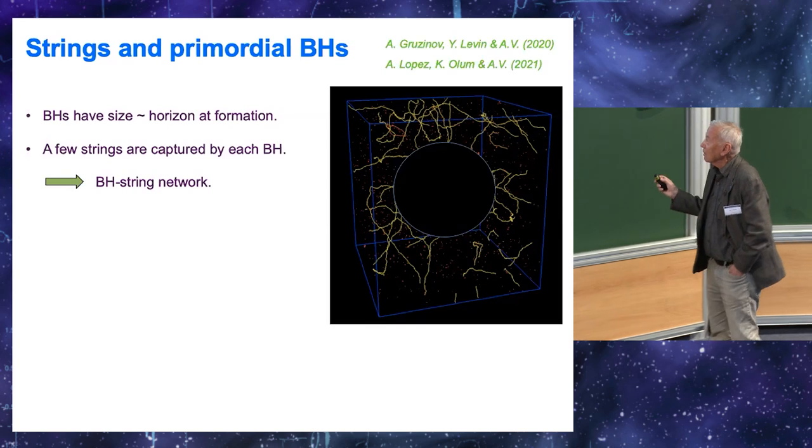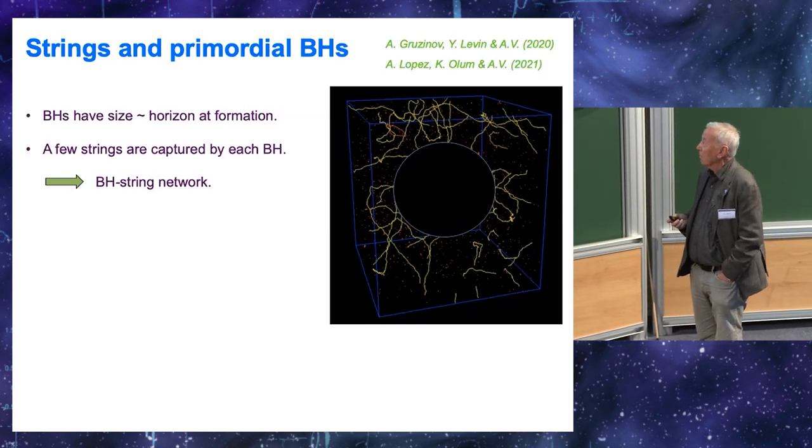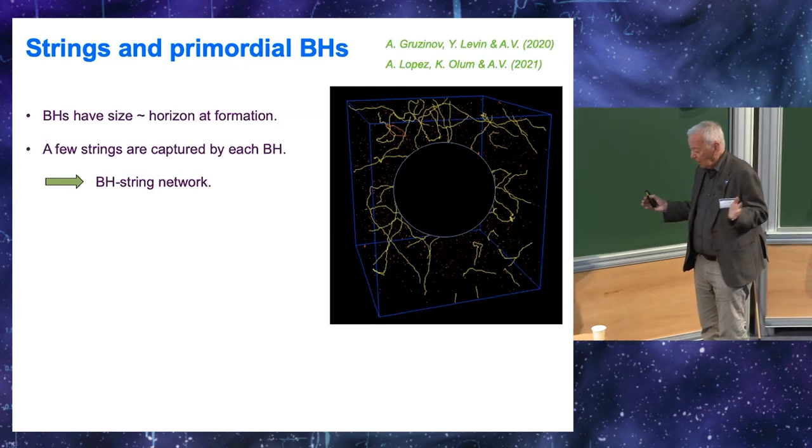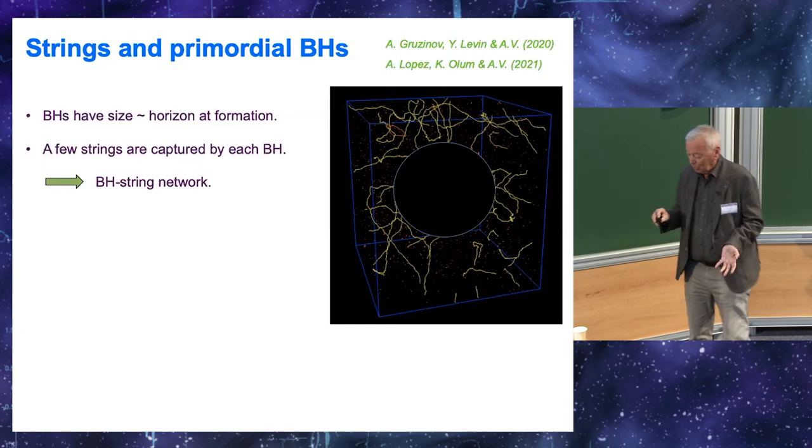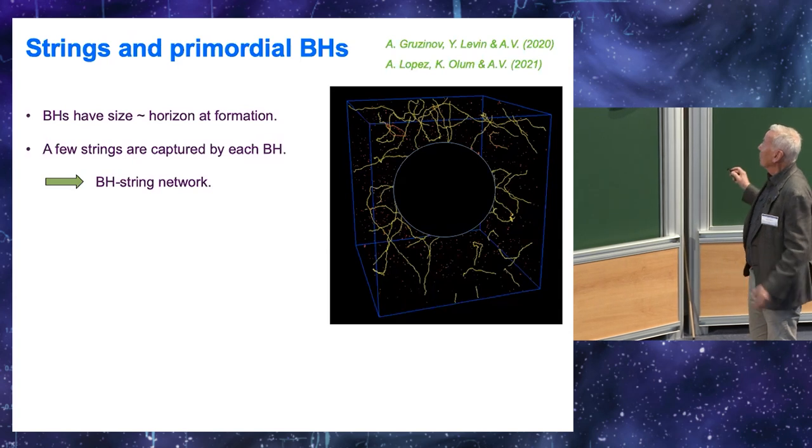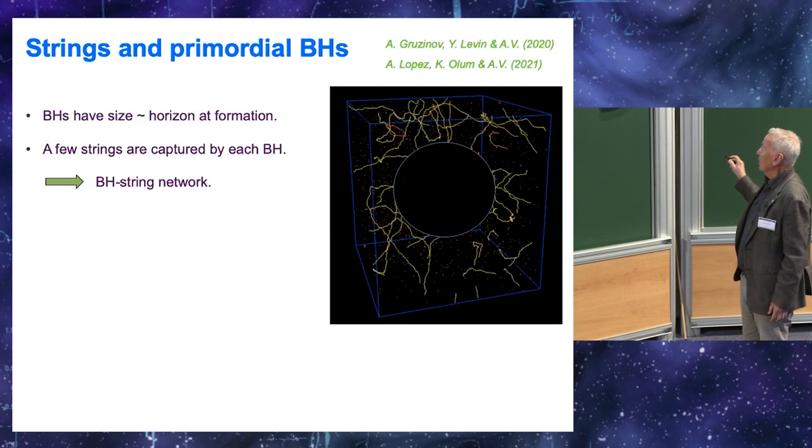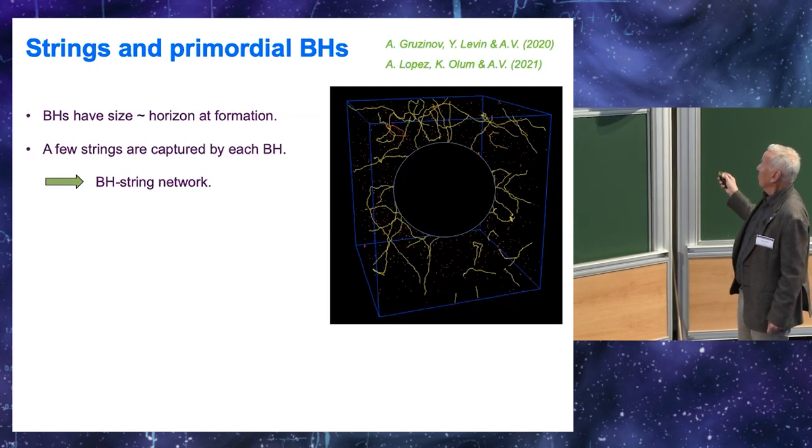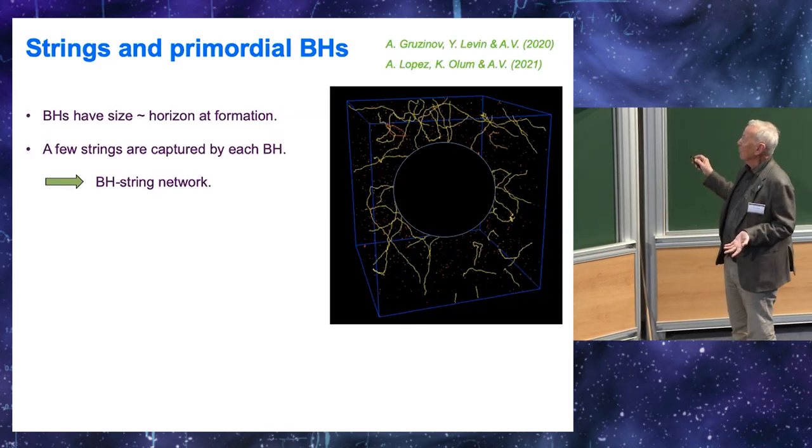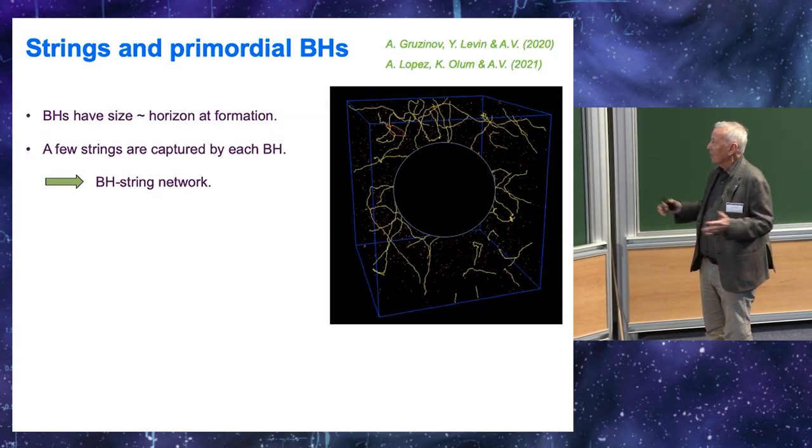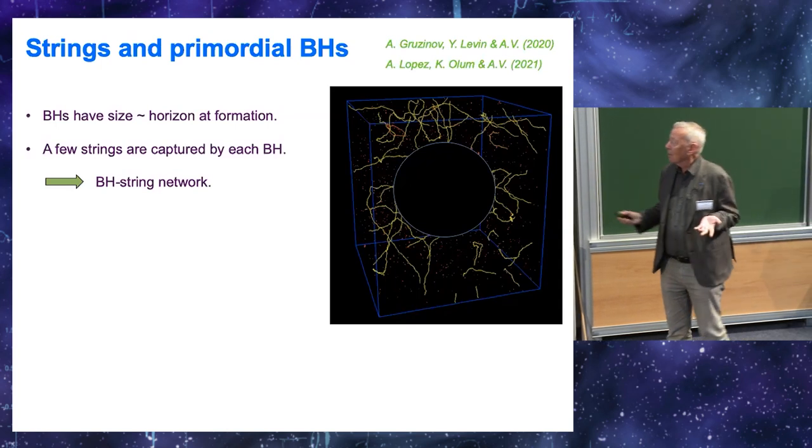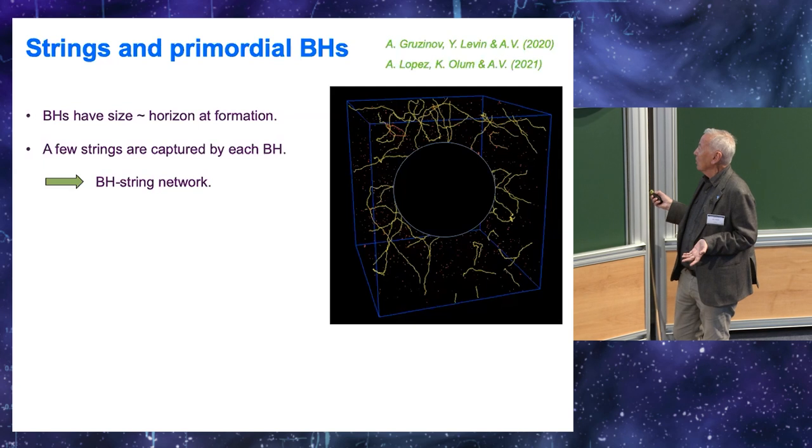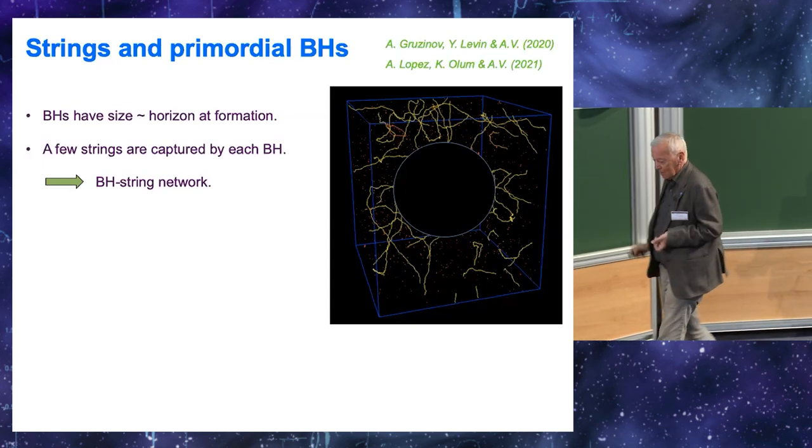A very different scenario is obtained if the black holes are primordial. Primordial black holes are formed in the early universe by collapse of large density fluctuations. And, the fluctuations in the early universe can collapse only if they have a horizon size. So, you have this horizon volume. And, you have a fluctuation collapse into a black hole, which has size comparable to the horizon. And, you see it is inevitable that this black hole will capture a few strings. And, then these strings will run from one black hole to another. So, the result is that you have a black hole string network, which is an interesting object to study. But, it's hard to tell much about how it will evolve without a numerical simulation. So, now these simulations are underway.